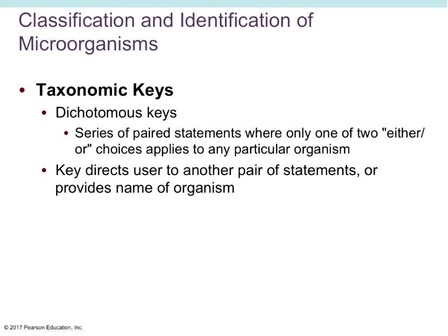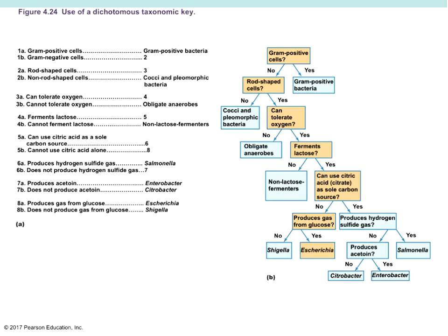Dichotomous keys: once we've done biochemical testing, we can use a dichotomous key — a series of statements where only one of two choices is correct. It's an either/or system that applies to a particular organism. A dichotomous key helps direct us to name an organism, narrowing down what it is based on information we know — physical characteristics like how it gram stains, and biochemical test results.